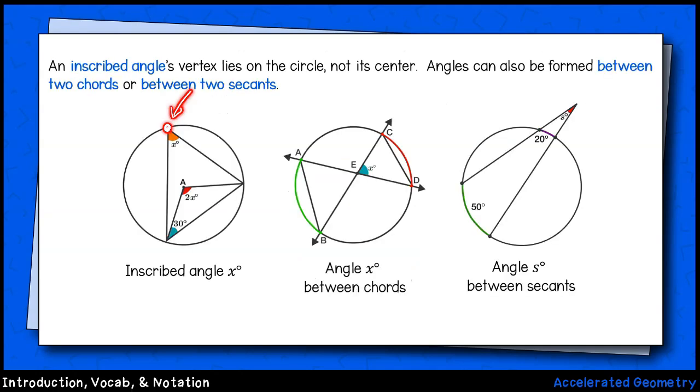We also saw last time that a circle could contain one or more inscribed angles. An inscribed angle has its vertex on the circle itself, not on the center. So, to summarize, circle A on the far left contains a central angle, labeled as the red 2x. It also contains an inscribed angle, whose vertex is located on the circle, which is labeled in orange as x degrees.